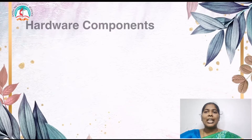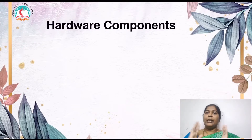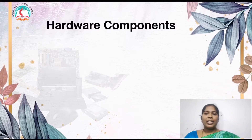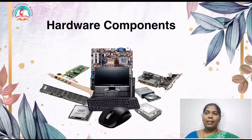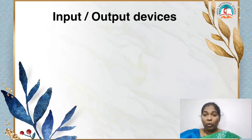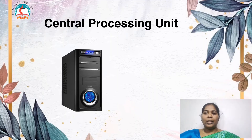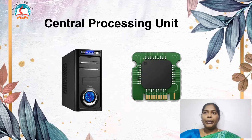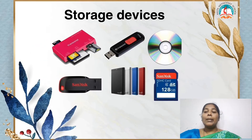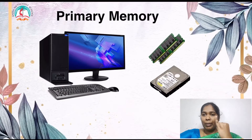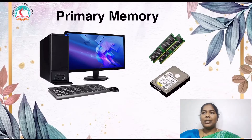What are hardware components? Like a CD, printer, monitor — all these come under hardware components. It also includes input-output devices such as printer, keyboard, speaker, and the central processing unit (CPU), storage devices like pen drive and CD, and then primary memory. So it includes primary memory, input-output devices, storage devices, and CPU.